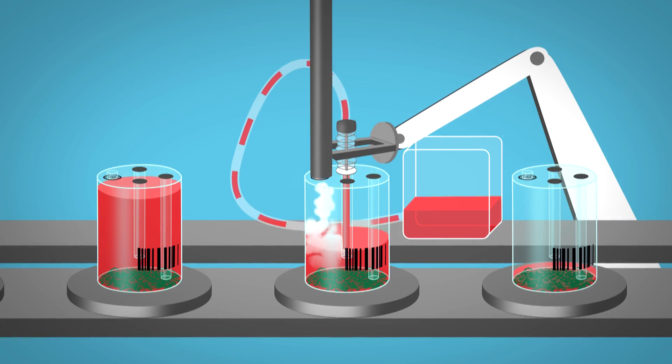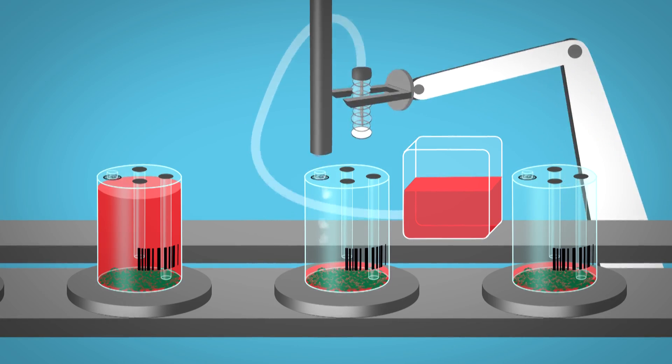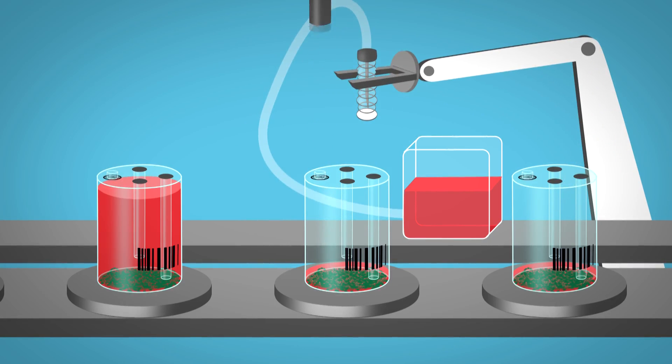90% of the media can be removed prior to cell collection, thereby maximizing the cell concentration without need for centrifugation. To do so, a waste media collection container is docked onto the G-REX septum.